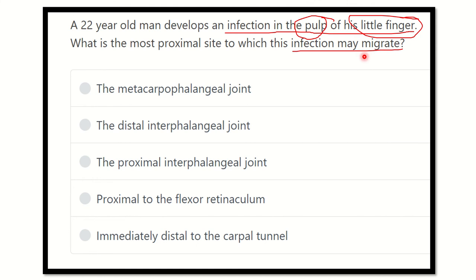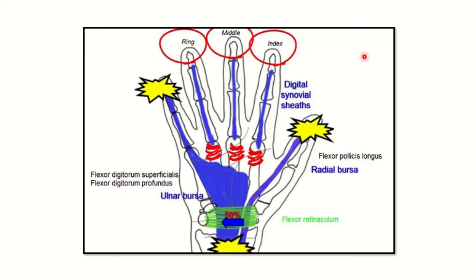For this answer we have to see a picture, and this one picture is enough to understand the whole question. Here we can see the index finger, the thumb, and the little finger — thumb, index, middle, ring, and little finger. According to the question, the infection is in the pulp of the little finger, and it may travel or ascend to the upper part like this, up to here.